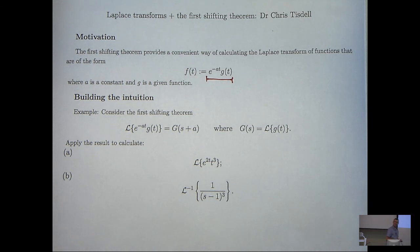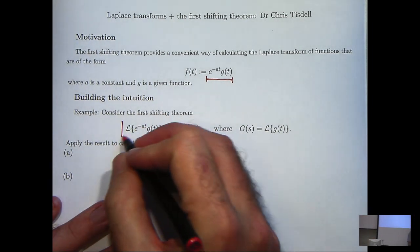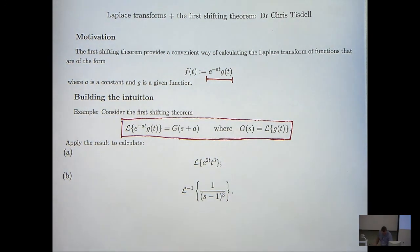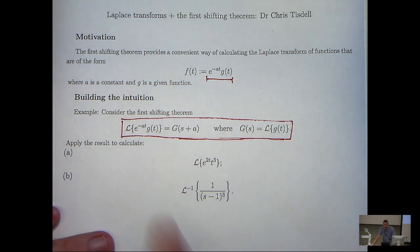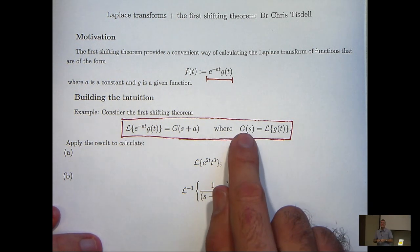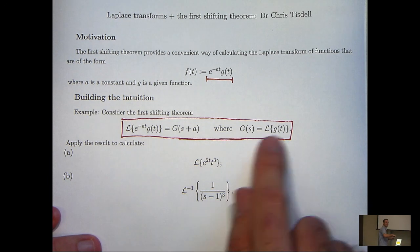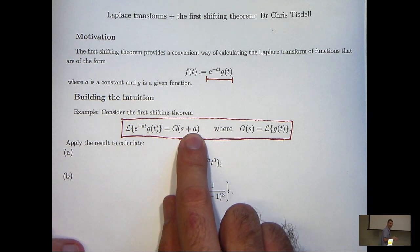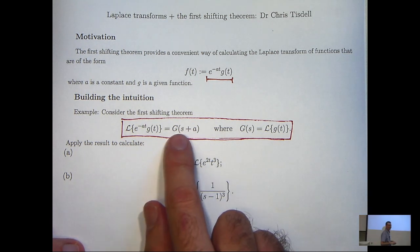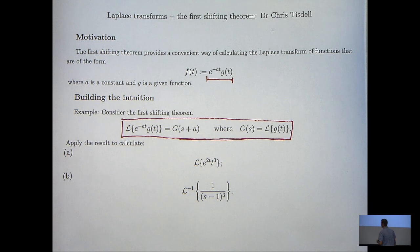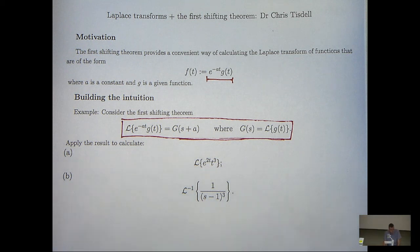So let's have a look at what the first shifting theorem is. Basically the first shifting theorem says that if you take the Laplace transform of a function of this form, and if big G of s is the Laplace transform of little g, then what you do is calculate this and then shift it a units. That's where the 'shifting' in the name comes from. There is also a second shifting theorem that we'll look at later.